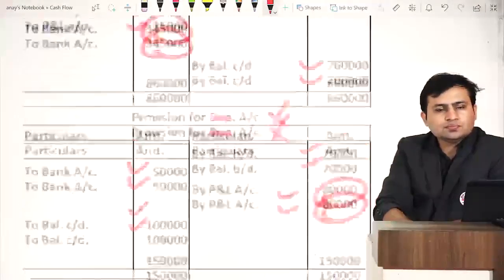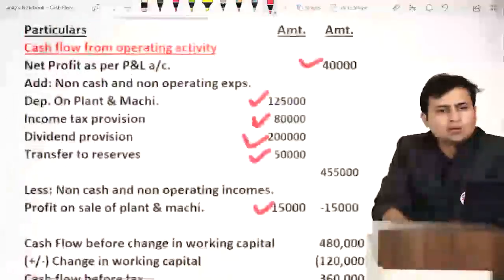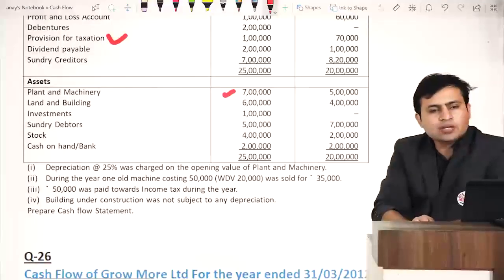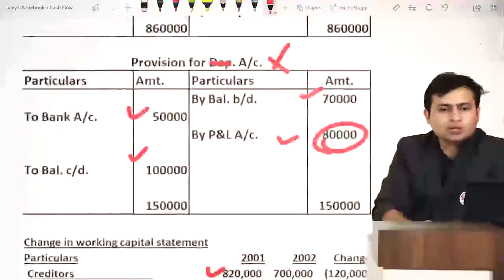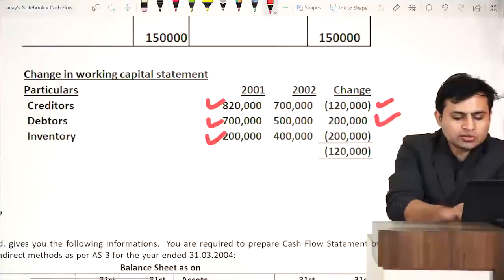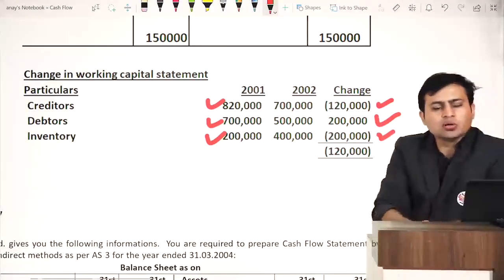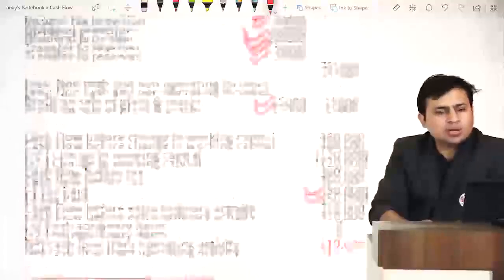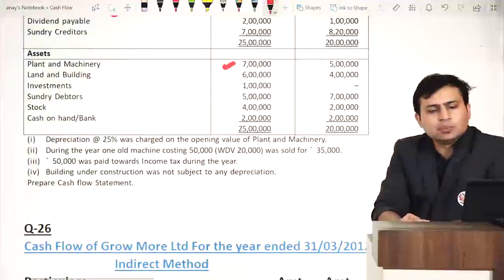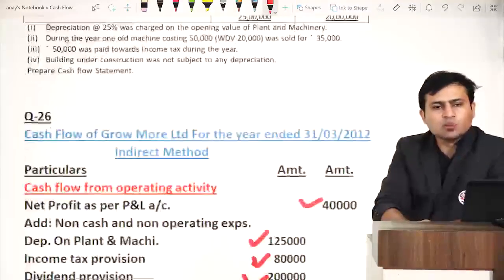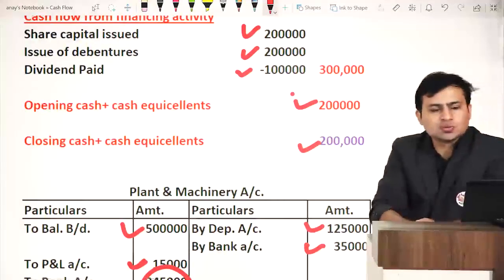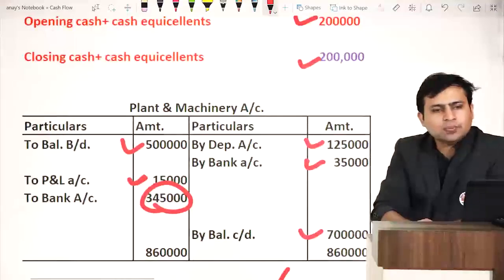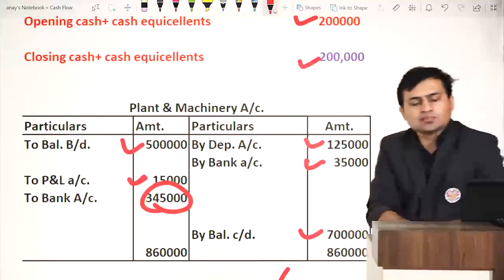Stock: opening 2 lakhs, closing 4 lakhs — increase of 2 lakhs — outflow in working capital. Cash and bank balance: opening 2 lakhs, closing 2 lakhs — recorded as opening and closing cash in cash flow statement. All adjustments and balance sheet items are now done. Working capital net change is negative 1 lakh 20,000.